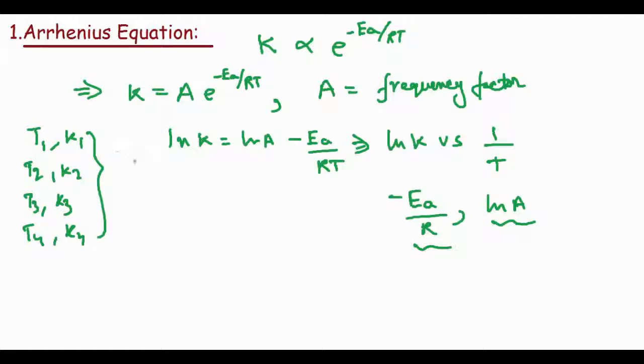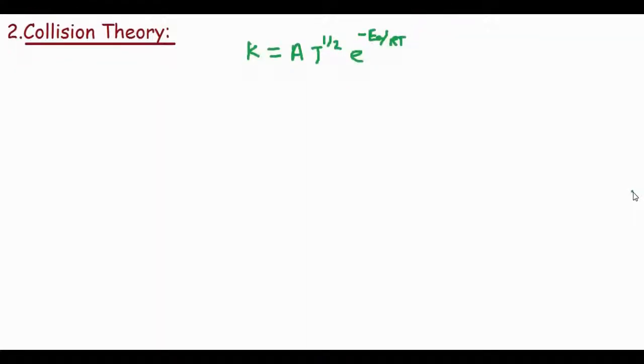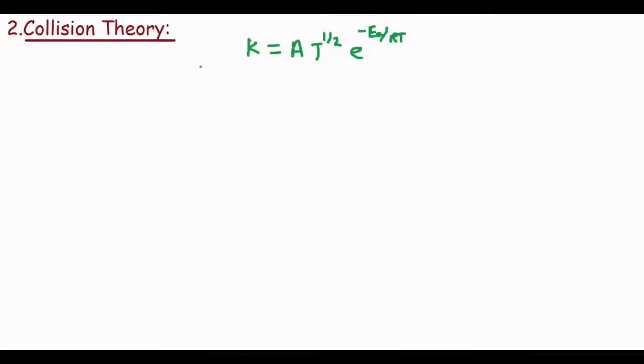The next model is collision theory, which is another model by which the rate constant can be determined. It says K = A × T^(1/2) × e^(-Ea/RT). The value of A for the Arrhenius equation and the value of A for collision theory may not be the same, because these are different models.